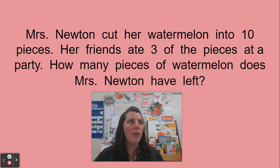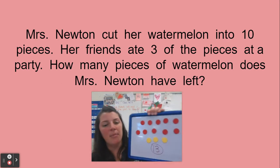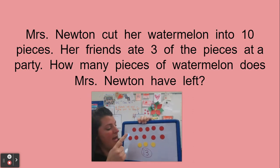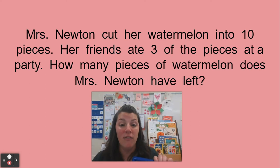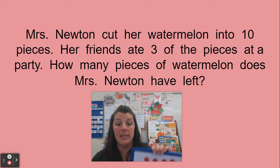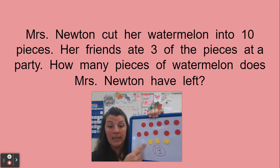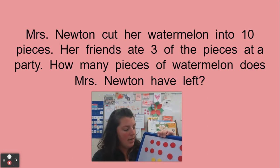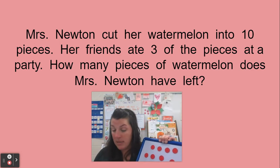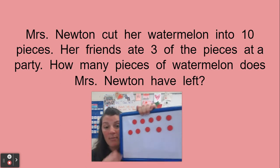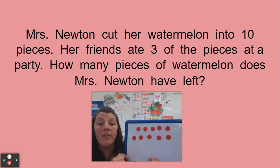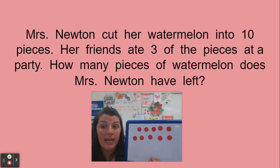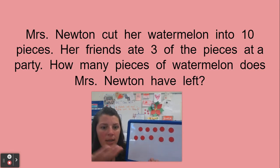You were all telling me that I made a big mistake because I put the pieces of watermelon she had, and then I said there were three more — but the problem actually said that her friends ate three of the pieces. So I put 10 and 3 together when actually we should have been taking some away. She had 10 pieces of watermelon and then her friends ate three of the pieces, so instead of putting more watermelon up, when you eat something, it goes away.